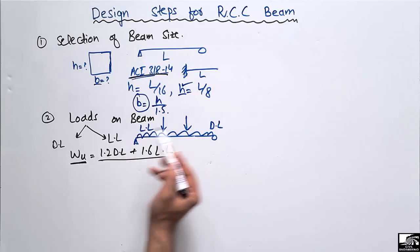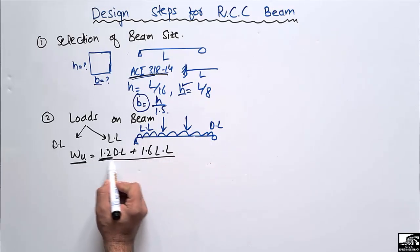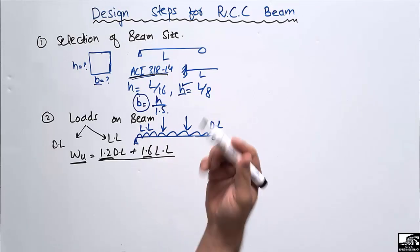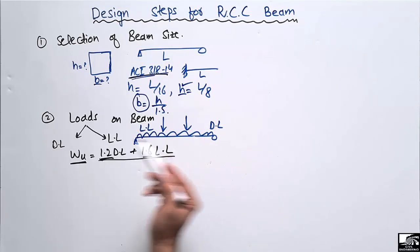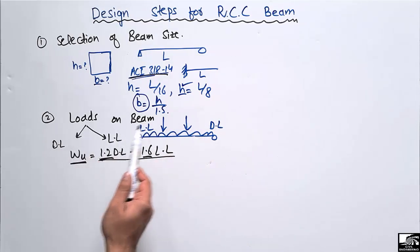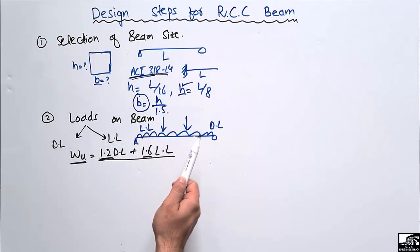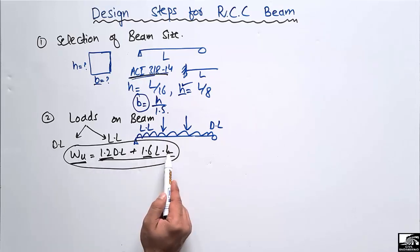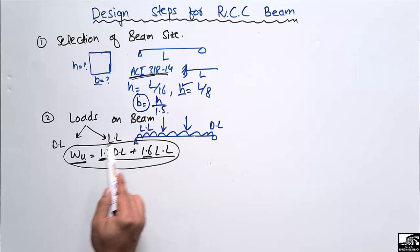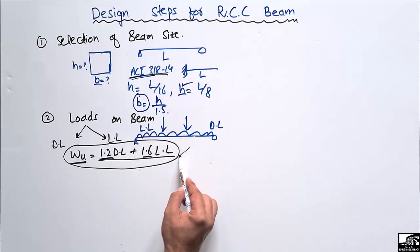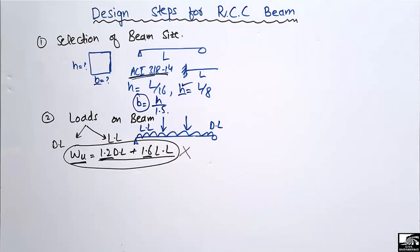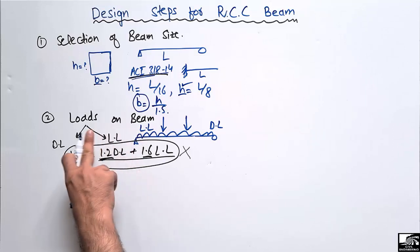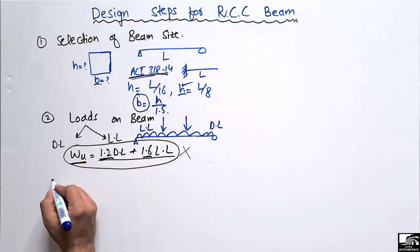According to ACI standards, the combined ultimate load is calculated by the formula: 1.2 × dead load + 1.6 × live load. From this formula we find the maximum factored load acting on the beam. We amplify the loads using these factors to provide a factor of safety. Note that this equation is code-specific — if you are using Indian Standard codes, you must use the corresponding Indian standard equation instead.